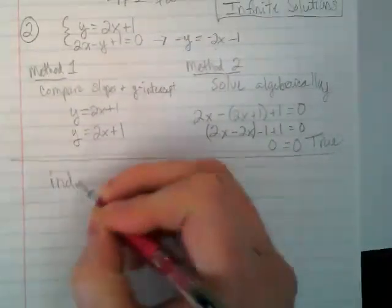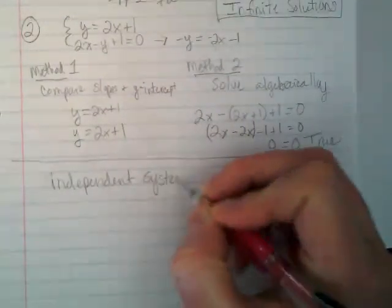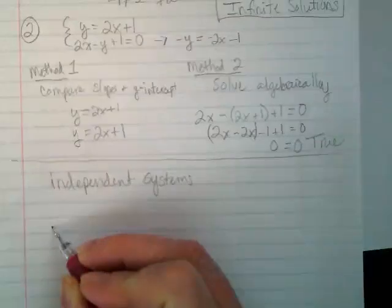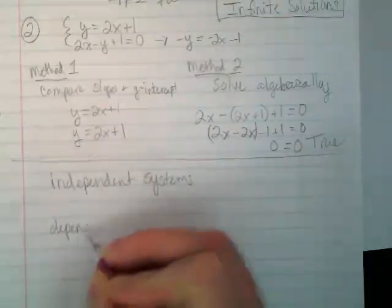We're going to have what we call independent systems. And what do you think the opposite of independent is? Dependent. Dependent systems.